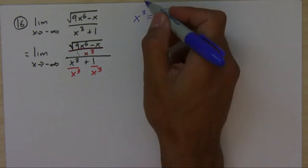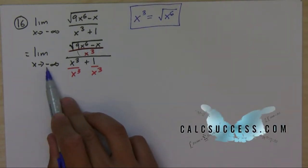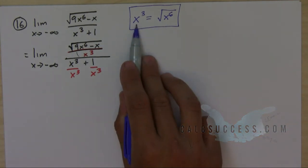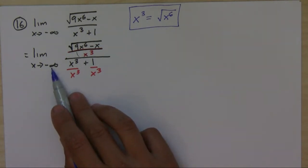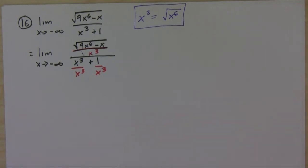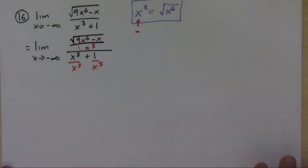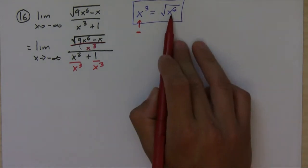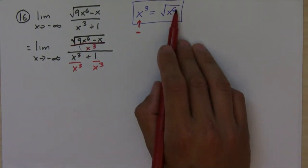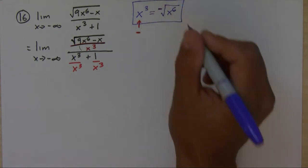You have to be very, very careful here. The limit is going to negative infinity, so when you change from this notation to this notation you have to make sure the signs stay the same. Since x is going to negative infinity, this value is always going to be negative. But when you take a negative number and raise it to the sixth power, that's positive, and the square root of that is positive as well.